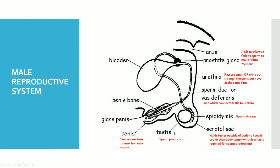First of all, we have the testes which produce sperm — the male gamete in sexual reproduction. Once the sperm is made, it gets stored in something called the epididymis. The scrotal sac has an important role of holding the testes outside of the body to keep it cool, simply because sperm production doesn't work quite well under normal body temperatures, so it needs to be a bit cooler.